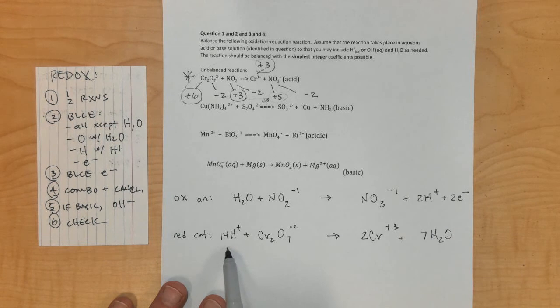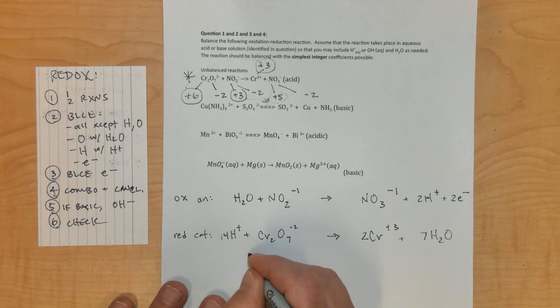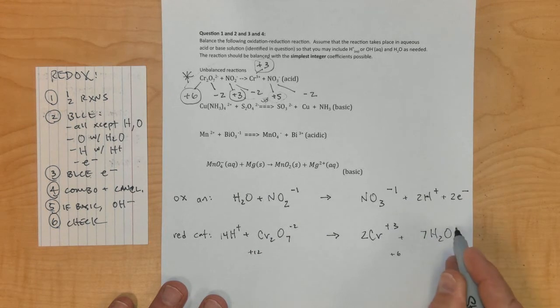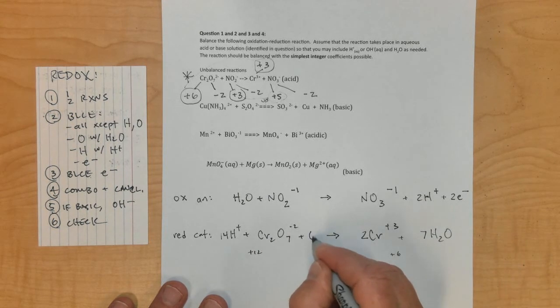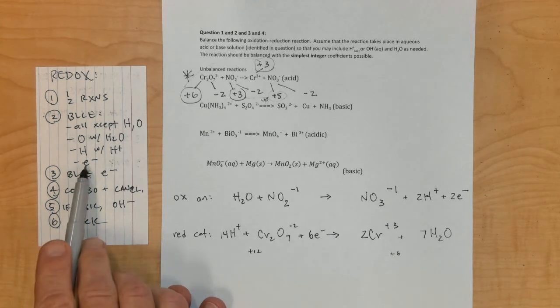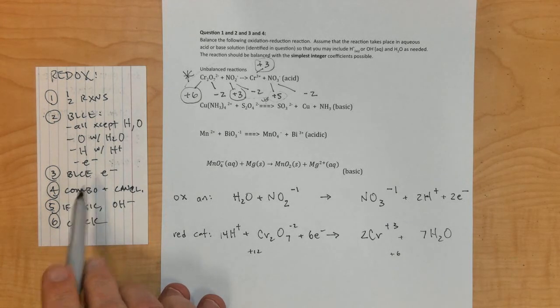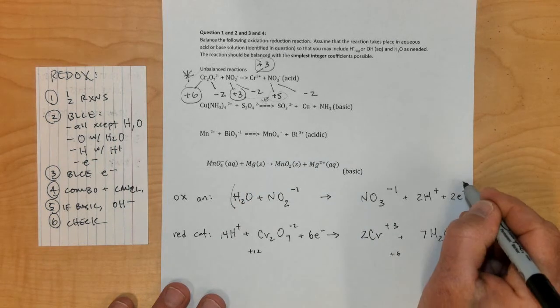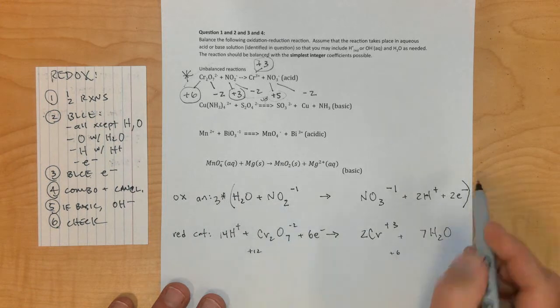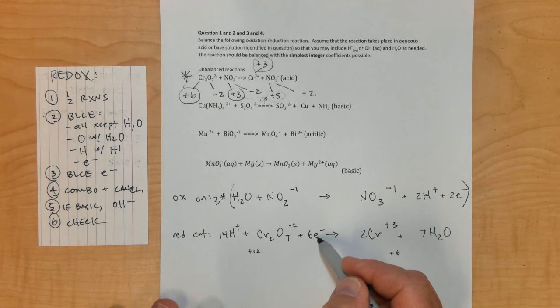Down here, I have positive 14 plus negative 2, so positive 12 on this side right now. Over here, I have positive 6 on the chromium and 0 for the water. So I need 6 electrons here to balance to get positive 6 on this side. Now I have to get the electrons to be the same. I'm going to multiply this reaction by 3.